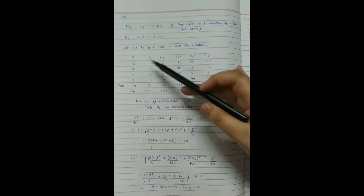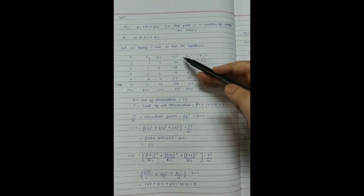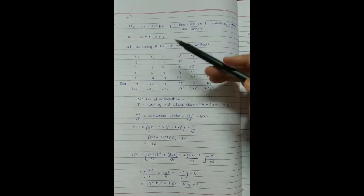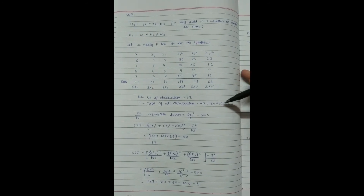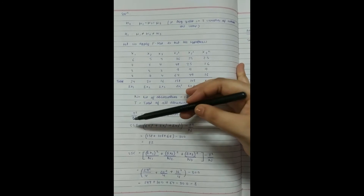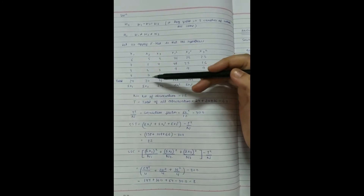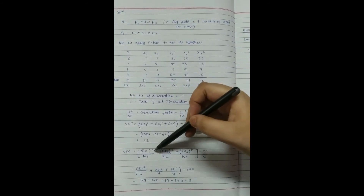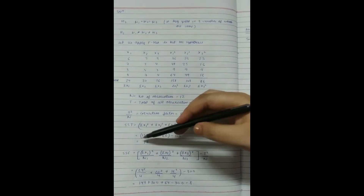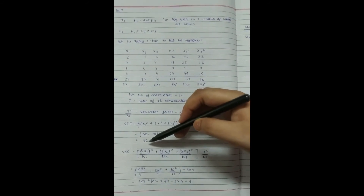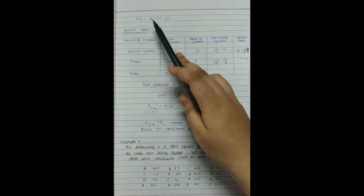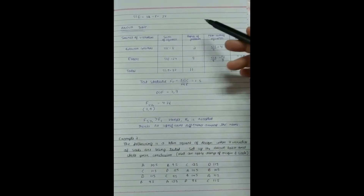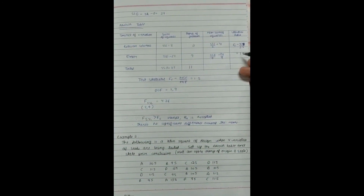Before applying the F-test we calculate the required values. The data x₁, x₂, and x₃ are given; we calculate x₁², x₂², and x₃² and sum them all. The total number of observations n = 4+4+4 = 12. The total T = 24+20+16 = 60. We calculate the correction factor T²/n. SST equals the summation of all xᵢ² minus T²/n, giving SST = 32. SSC equals the summation of (column totals)²/nᵢ minus T²/n, giving SSC = 8. SSE = SST − SSC = 24. We then fill the ANOVA table and calculate the F ratio, which comes out to be 1.5.